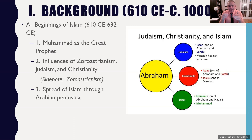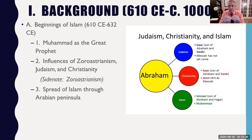Muhammad is seen as the last and greatest prophet in a series of prophets who have come to proclaim that all must submit to the will of Allah. A key concept is that Islam means to submit — to submit to the will of Allah. Muhammad is seen as the latest and last prophet. To Muslims, Jesus was a prophet, Abraham was a prophet, and Moses was a prophet, showing this connection between the three faiths.